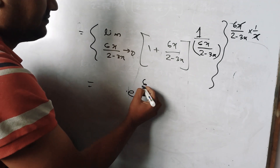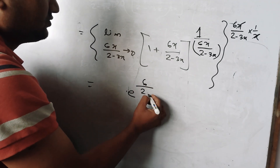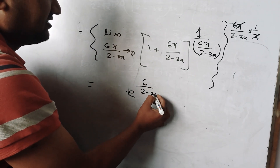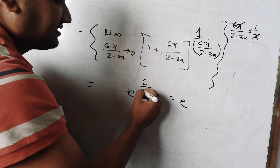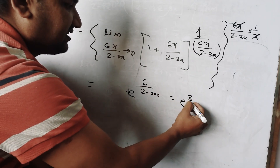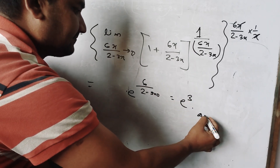The answer is e to the power of 6 divided by (2 minus 3 times 0), which is e to the power 6 by 2 — that is e to the power 3. That is the answer.